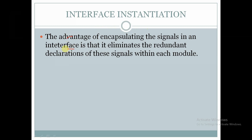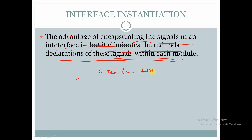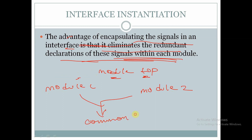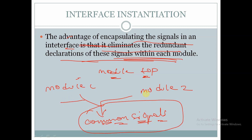Interface instantiation: the advantage of encapsulating the signals in an interface is that it eliminates the redundant declaration of these signals within each module. If we have a top module and two other modules — module 1 and module 2 — with a common set of signals, we can declare this common set of signals in the interface and use it in module 1, module 2, and the top module, so that redundant declarations of signals within each module will be eliminated.